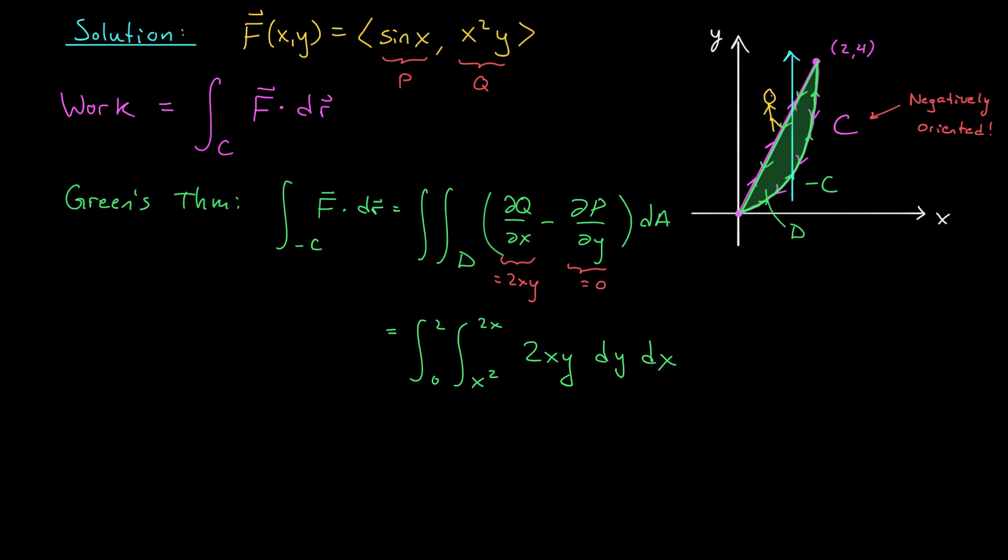We can write our double integral as the integral from 0 to 2 of the integral from x² to 2x of 2xy dy dx. At this point, I know you can complete the calculation. This is a straight up double integral, and you should get a value of 16/3. That's the value of the line integral along -C. We had to use -C to apply Green's theorem. That means that the integral along C, the integral we're actually trying to compute, is the negative of the answer we just found. If we reverse orientation, the answer is multiplied by -1. So the integral along C of F·dr is -16/3.